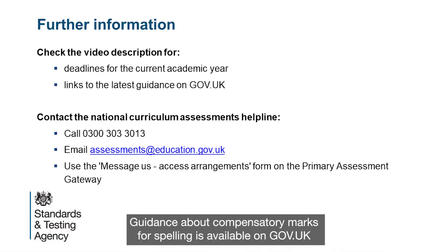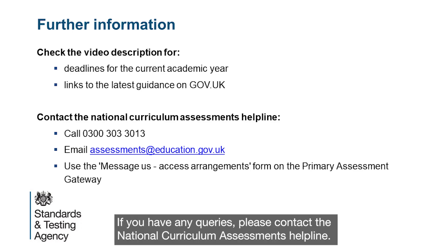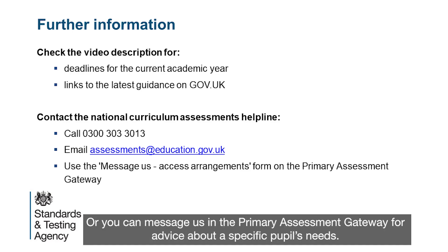Guidance about compensatory marks for spelling is available on gov.uk. If you have any queries, please contact the National Curriculum Assessments Helpline. Or you can message us in the Primary Assessment Gateway for advice about a specific pupil's needs.